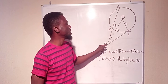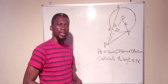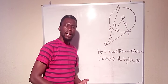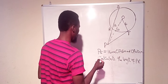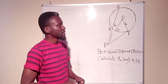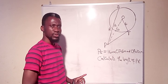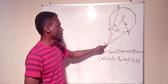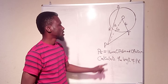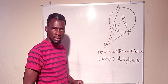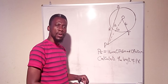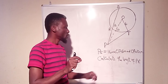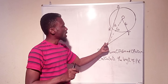Since PR is included in the length of PS, we are going to use the tangent-secant theorem. The tangent-secant theorem states that if a tangent and a secant are drawn from a common point outside a circle, the square of the tangent is equal to the product of the outside part of the secant and the length of the entire secant.